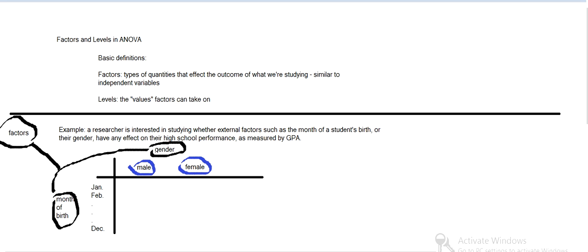So for gender, there's those two levels. And for month of birth, we've got 12 levels. I didn't write them all down, but that should be clear.